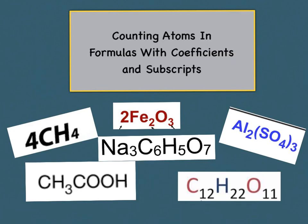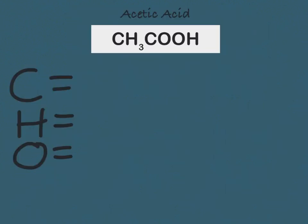Today we're going to review counting atoms in chemical formulas that have coefficients and subscripts. Let us begin by counting the number of atoms found in the chemical formula for acetic acid. The formula for acetic acid is CH₃COOH.